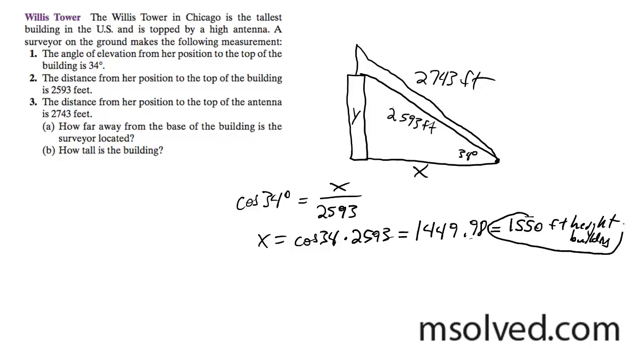There's 1. And then the second portion, part B, excuse me, I said that was height. That's the distance to the building. Y is going to be equal to the sine 34 degrees equal to y over 2,593 feet. And y is equal to, which is going to be equal to...